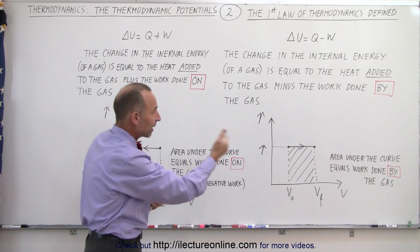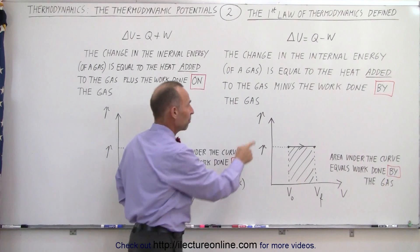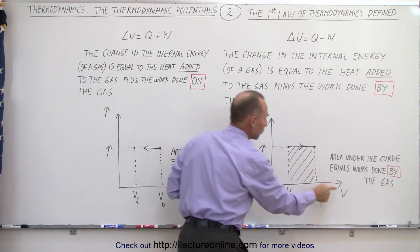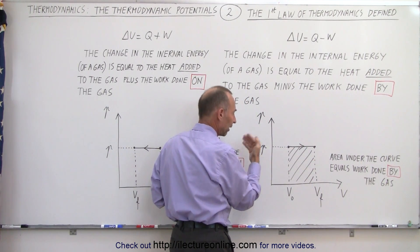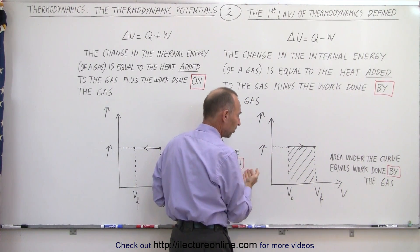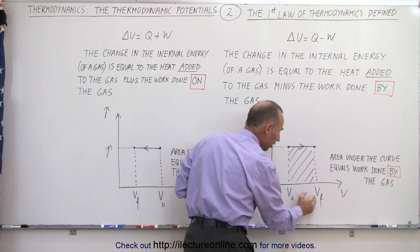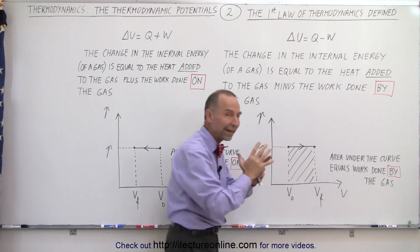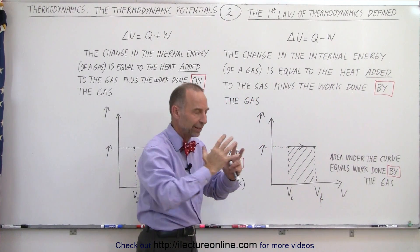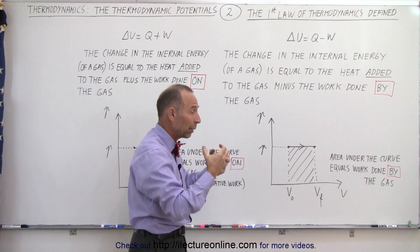Here we have a schematic of that on the PV diagram, pressure versus volume diagram. If at constant pressure, an isobaric process, we change the volume of the gas from a smaller volume to a larger volume, then the gas does work by expanding. The gas pushes against the atmosphere and does work.